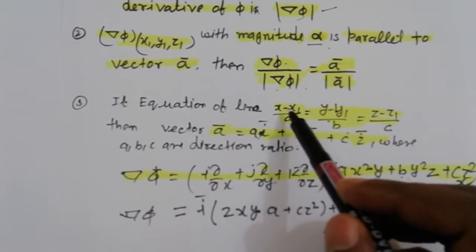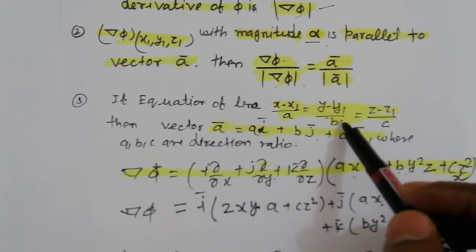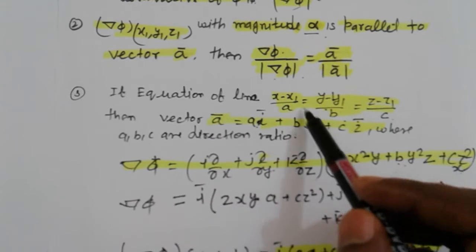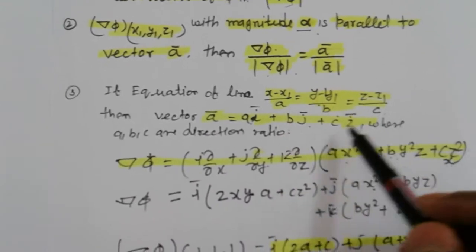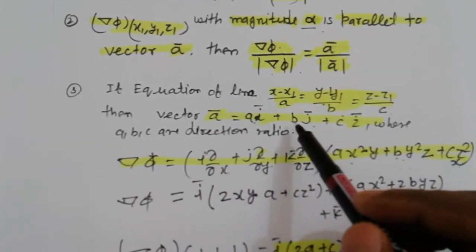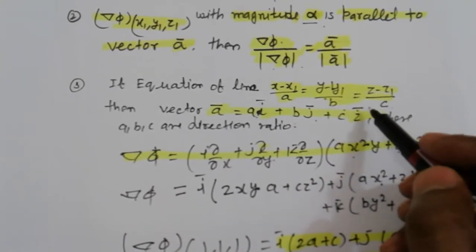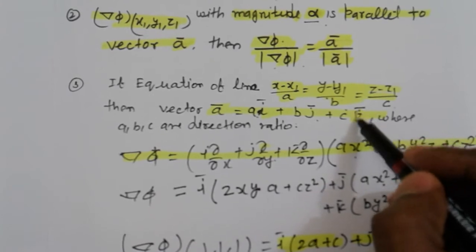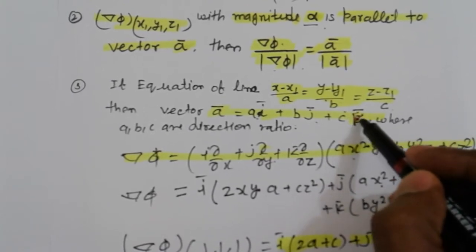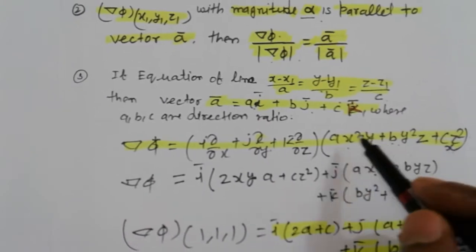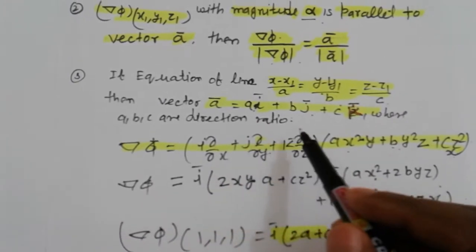If the equation of line is x minus x1 upon a, y minus y1 upon b, z minus z1 upon c, then vector a equals a i plus b j plus c k, where a, b, c are direction ratios.